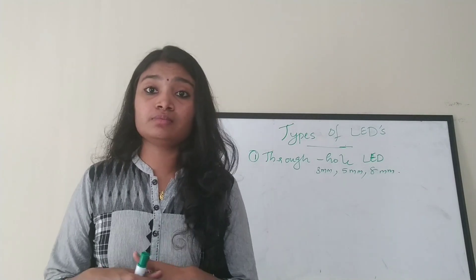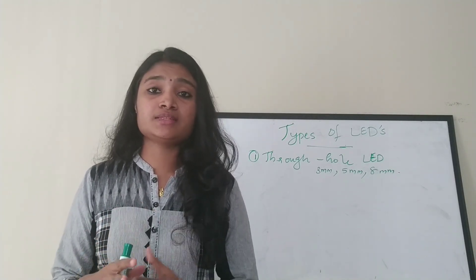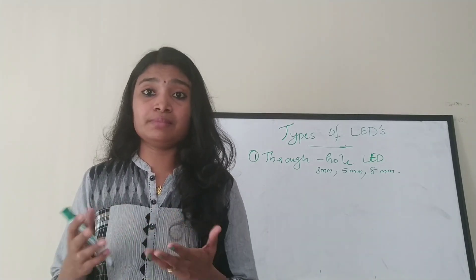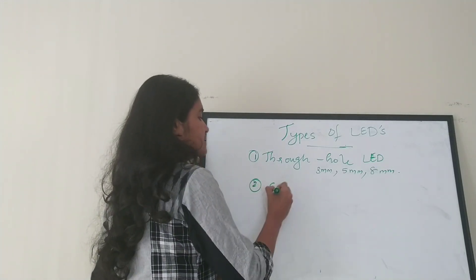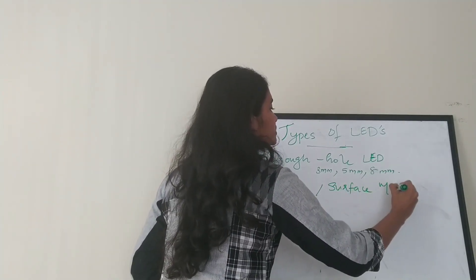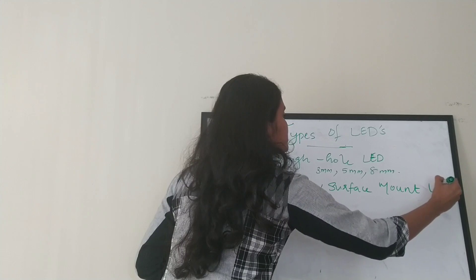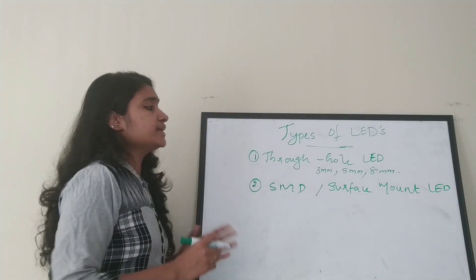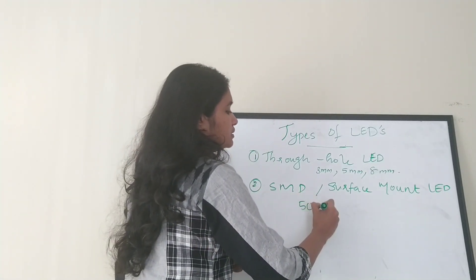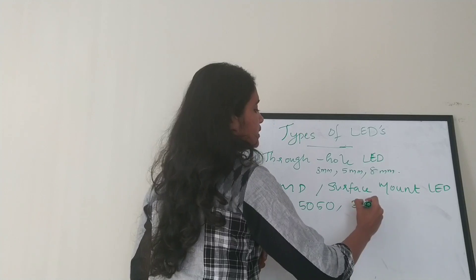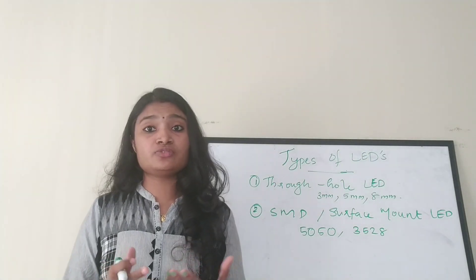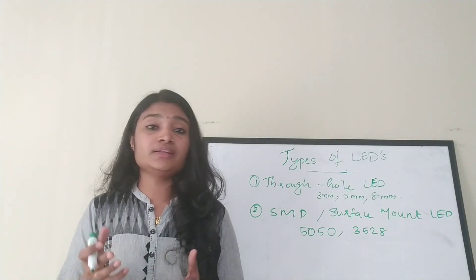The next type is the surface mount LED, also called SMD — surface mount device. These LEDs can be easily mounted onto a PCB. The general types are 5050 and 3528. I have included an image of a surface mount LED — please watch the image to find out how it looks.